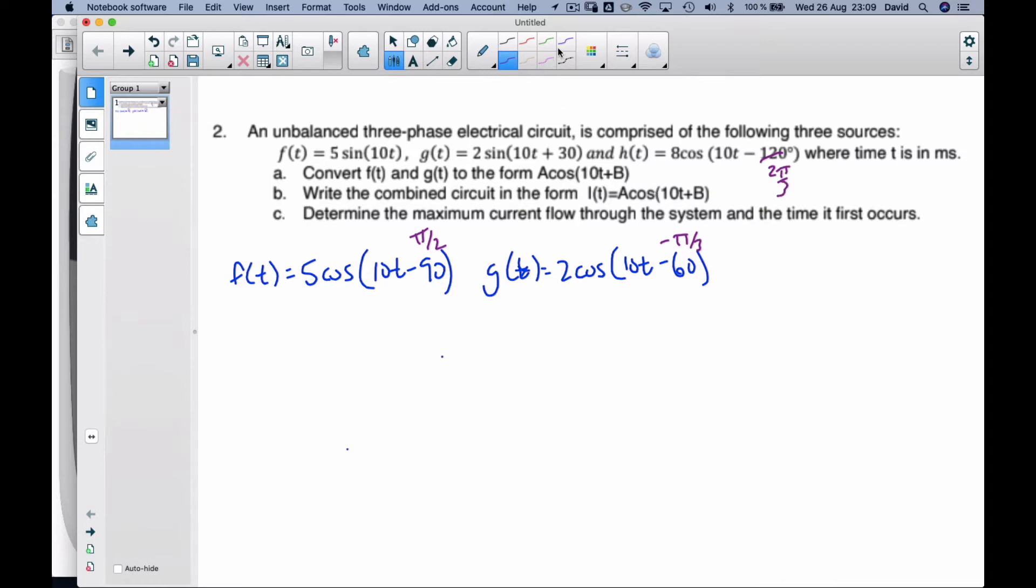If I'm going to combine all these curves for part b, I'm going to take i(t). So i(t) is going to be f(t) + g(t) + h(t).